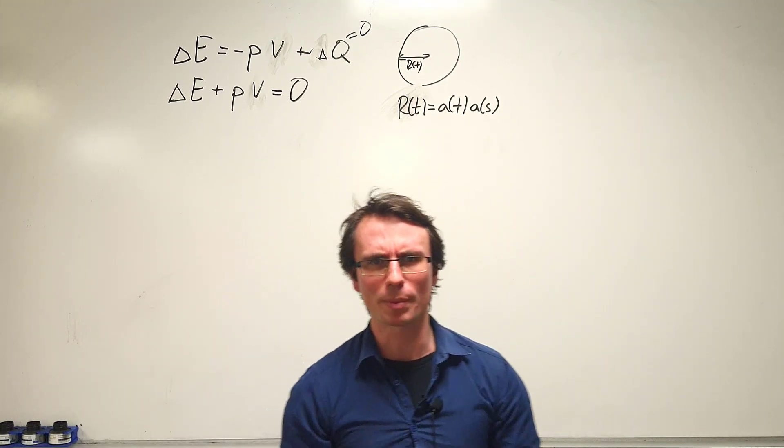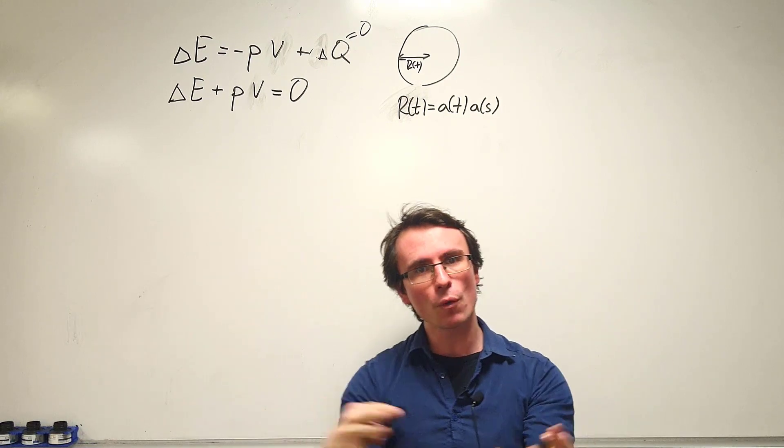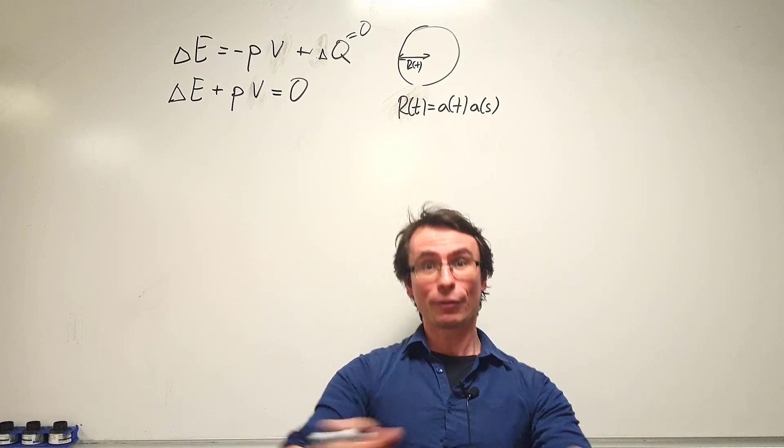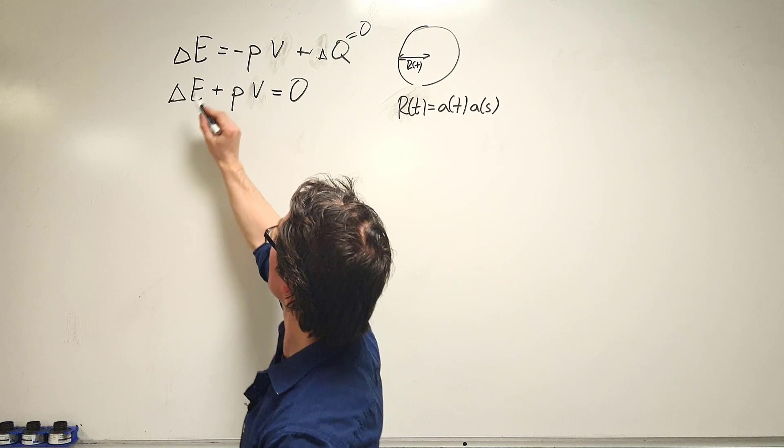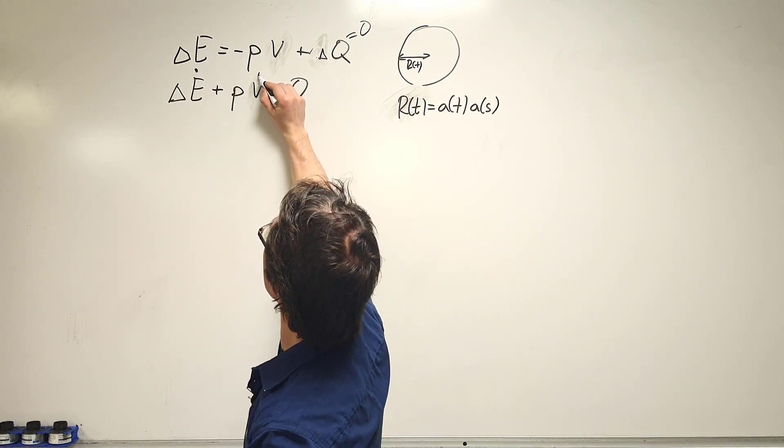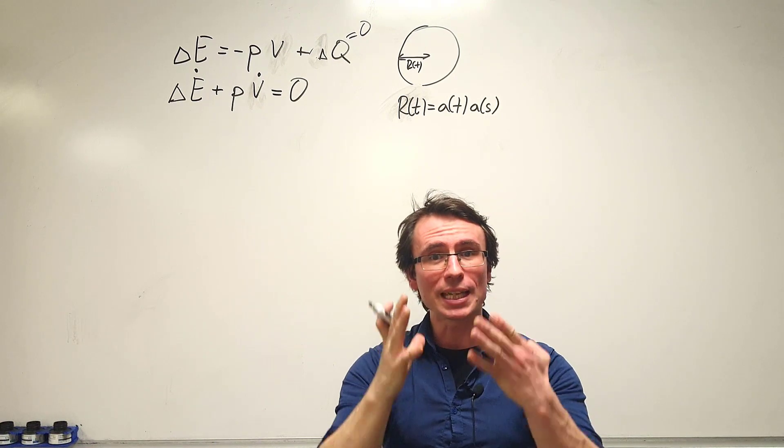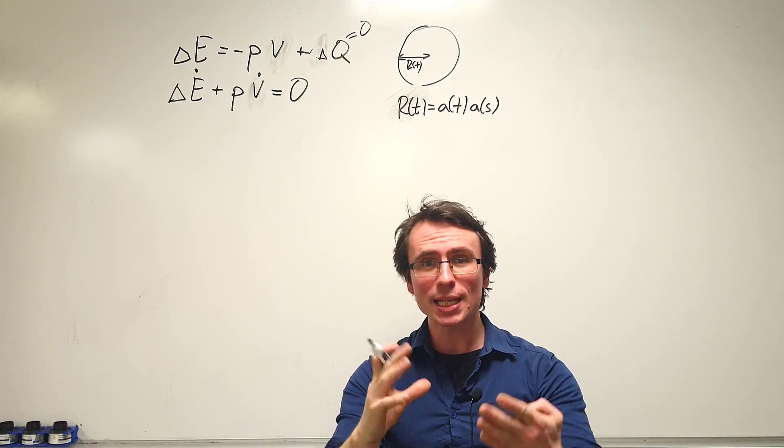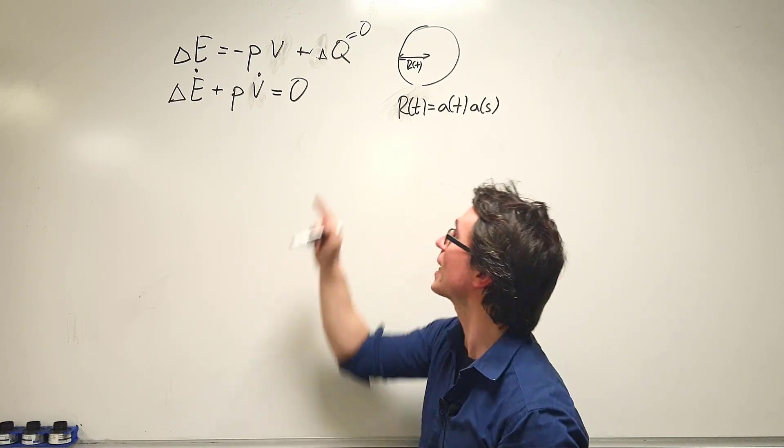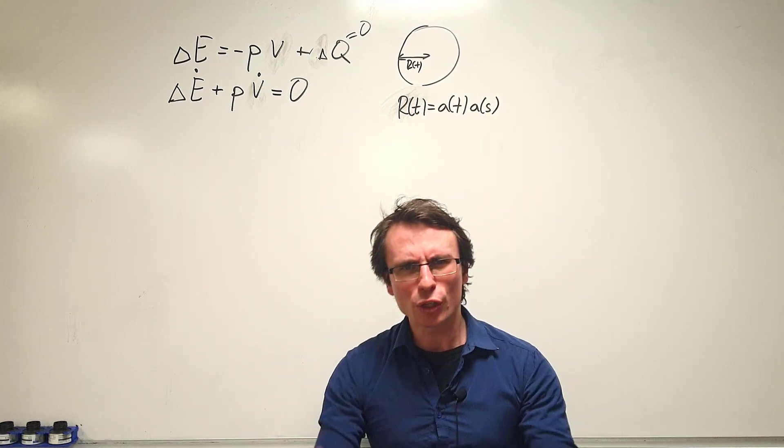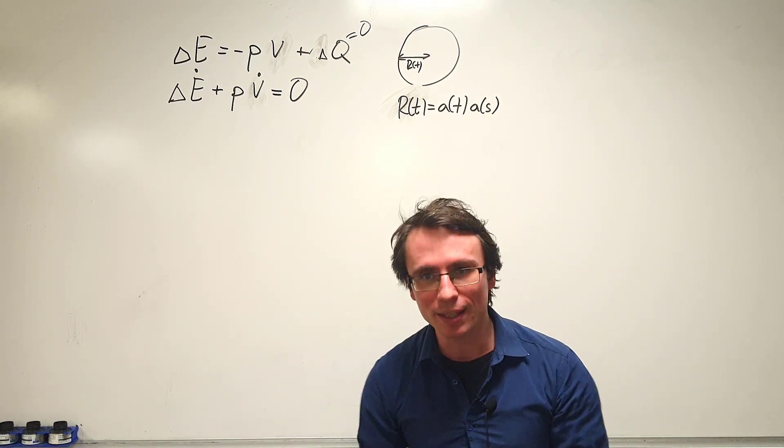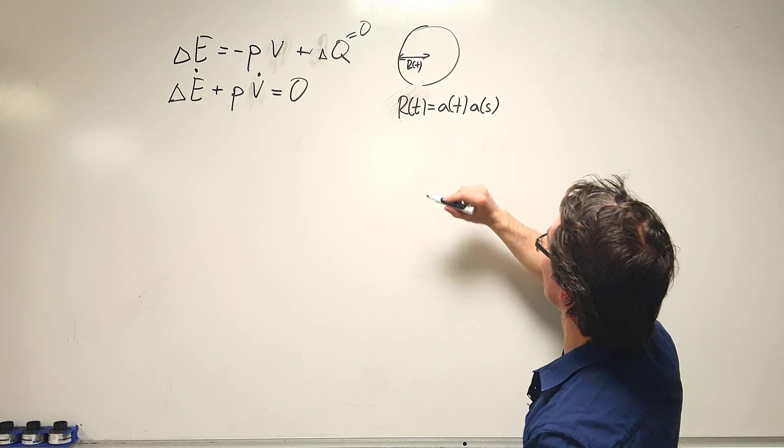Because we're interested in how things evolve with time, we're going to differentiate and take the time derivatives of those quantities. The first expression that I really need to differentiate carefully is V dot.